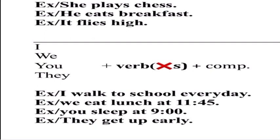For example: 'I walk to school every day', 'we eat lunch at 11:45', 'you sleep at nine o'clock', 'they get up early'. With I, we, you, they — we have walk, eat, sleep, get up. We cannot say 'walks', 'eats', 'sleeps' because the subject is plural, so we cannot have 's' with the verb.